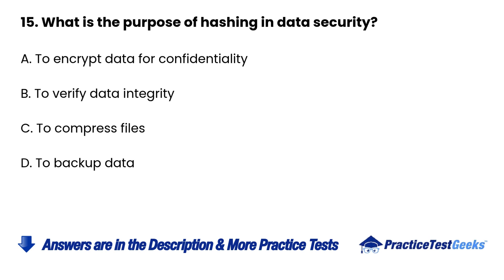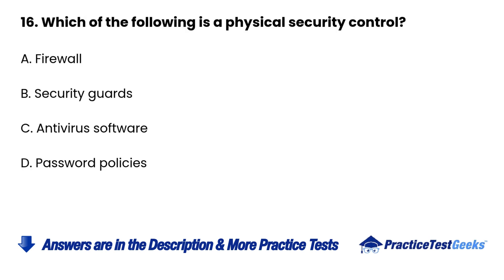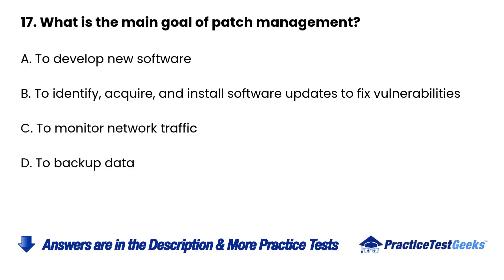Question 15: What is the purpose of hashing in data security? To verify data integrity. C. To compress files. D. To backup data. Question 16: Which of the following is a physical security control? A. Firewall. B. Security guards. C. Antivirus software. D. Password policies.